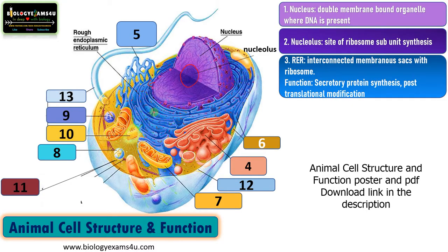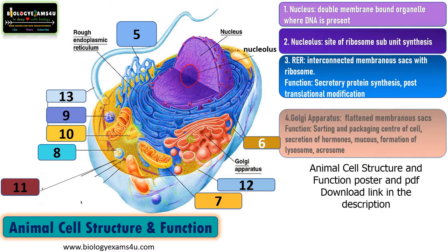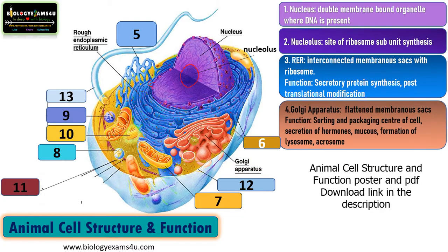Once the protein is synthesized, it enters the RER where it is further glycosylated or modified, then it moves to the Golgi apparatus. So RER is the site of secretory protein synthesis. The next organelle in line is the Golgi apparatus, and the protein then moves there.